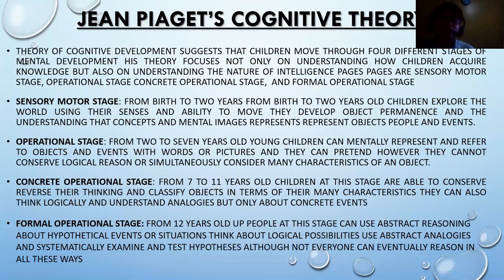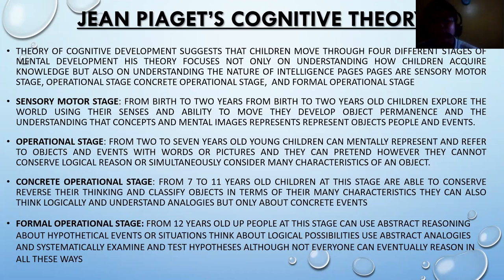We now look at Jean Piaget's cognitive theory. This theory suggests that children move through four different stages of mental development. Piaget's work focuses not only on understanding how children acquire knowledge, but also on understanding the nature of intelligence. The four stages include the sensorimotor stage, the pre-operational stage, the concrete operational stage, and the formal operational stage. The sensorimotor stage happens from birth to two years of age, where children explore the world using their senses and ability to move, developing object permanence and understanding that concepts and mental images represent objects, people, and events.